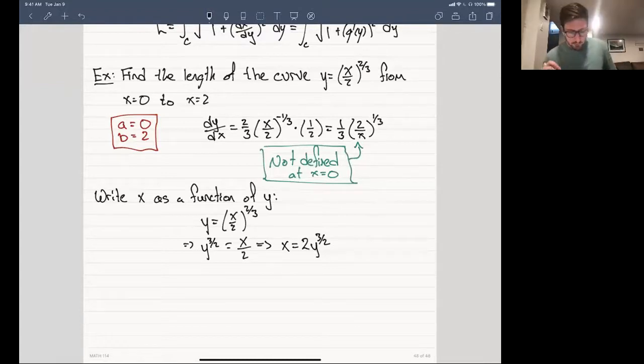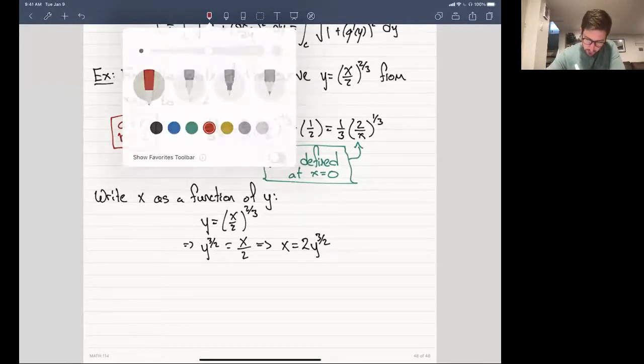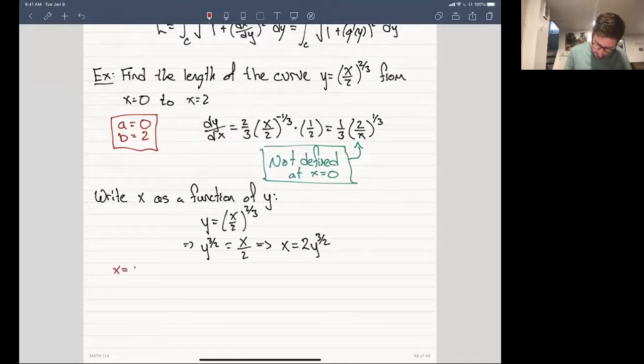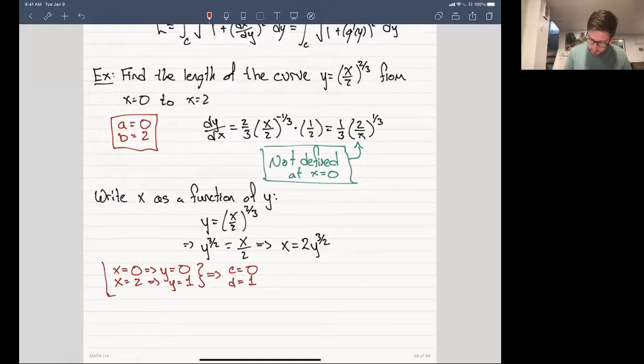Now, we can ask ourselves first, what are the bounds on this thing? Well, we can plug them into the original function. And we can see that when x is equal to 0, this gives us y is also equal to 0. When x is equal to 2, this gives us that y is equal to 1. So this whole thing together tells us c is equal to 0 and d is equal to 1. If you need to make a little sketch of this, that doesn't hurt. It might just clarify things a little bit.